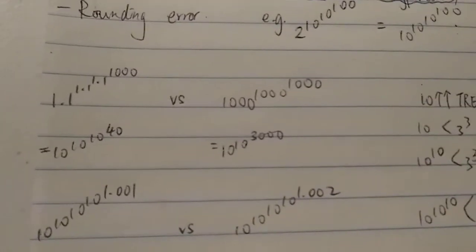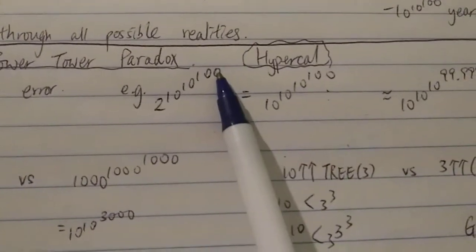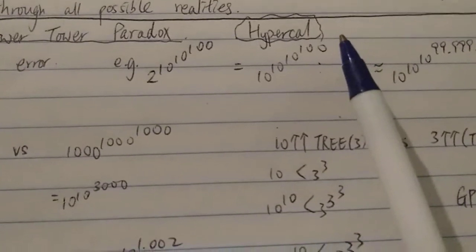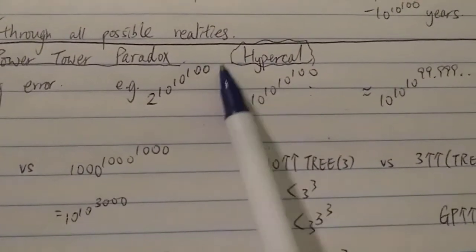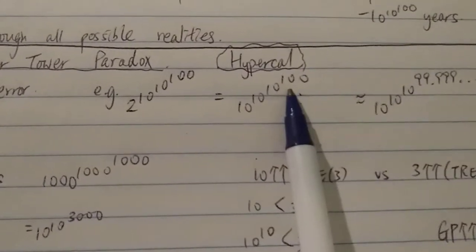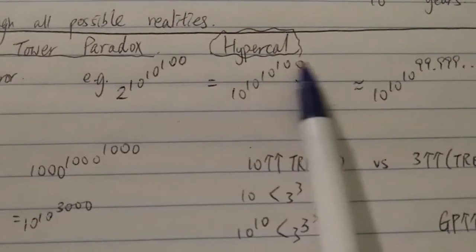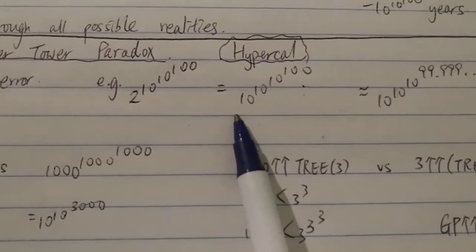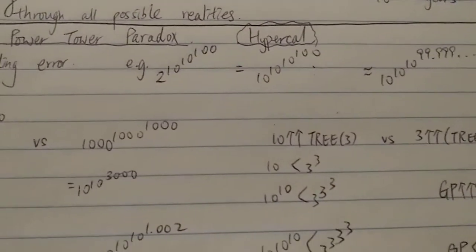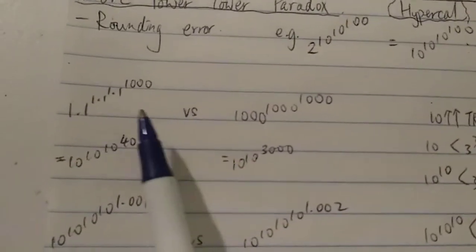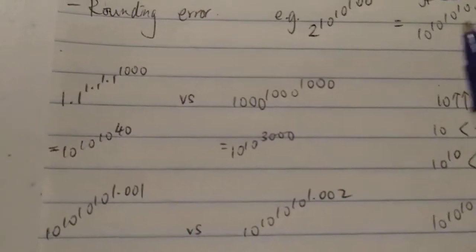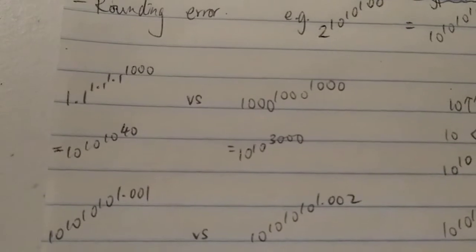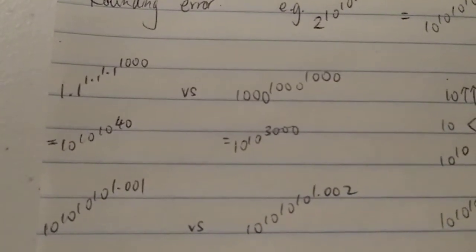Now, if you change the top number it will greatly change the size of the number compared to changing the base. The base is the least important; the top number is the most important if you want to change the size. That's because for a power tower you have to start calculating from the top all the way down to the bottom. So the first poll question I asked was: 1.1^(1.1^(1.1^(1.1^1000))) versus 1000^(1000^1000) — which one is bigger?